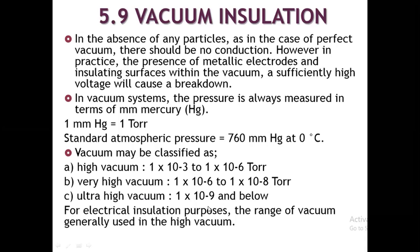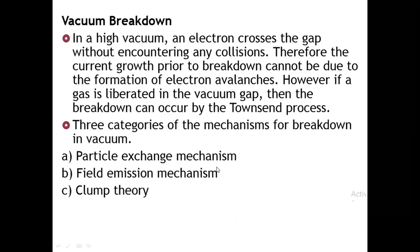For electrical insulation purposes, the range of vacuum generally used is high vacuum. Vacuum can be used as a dielectric. In a high vacuum, an electron crosses the gap without encountering any collision, therefore current growth prior to breakdown cannot be due to electron avalanche formation. However, if gas is liberated in the vacuum gap, breakdown can occur by the Townsend process.